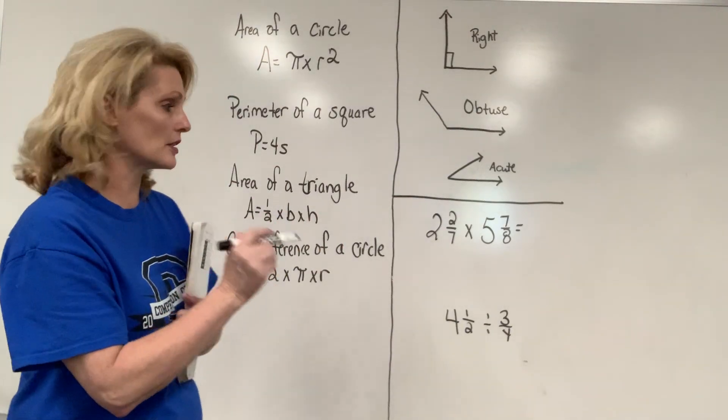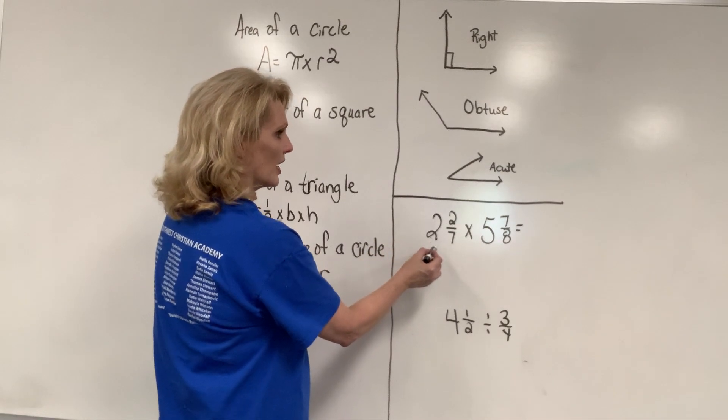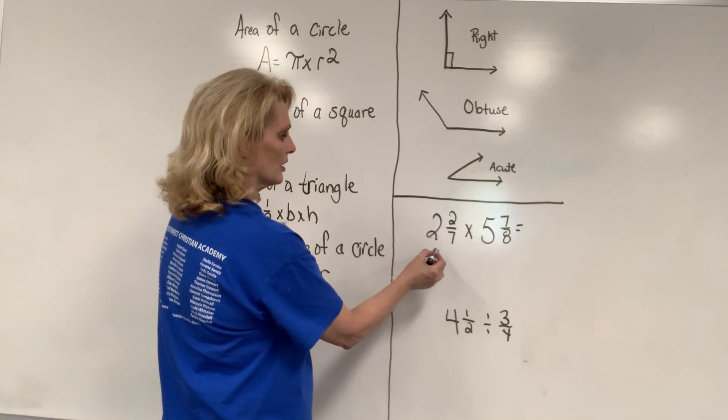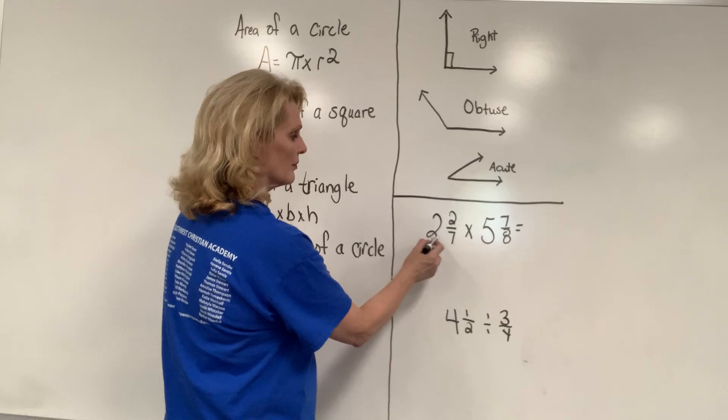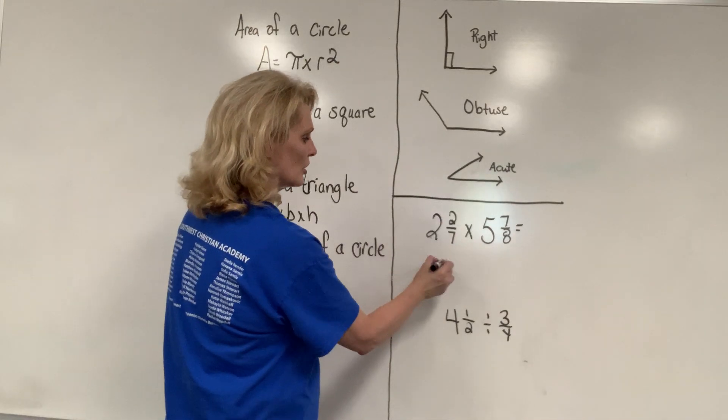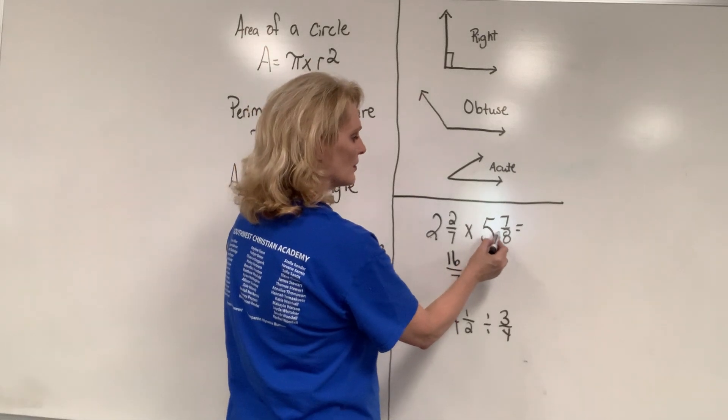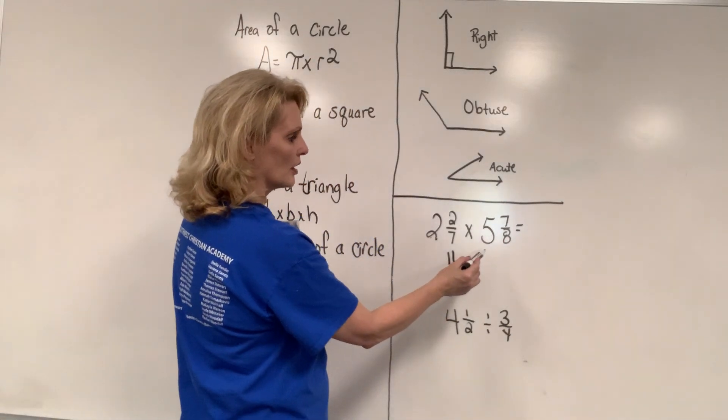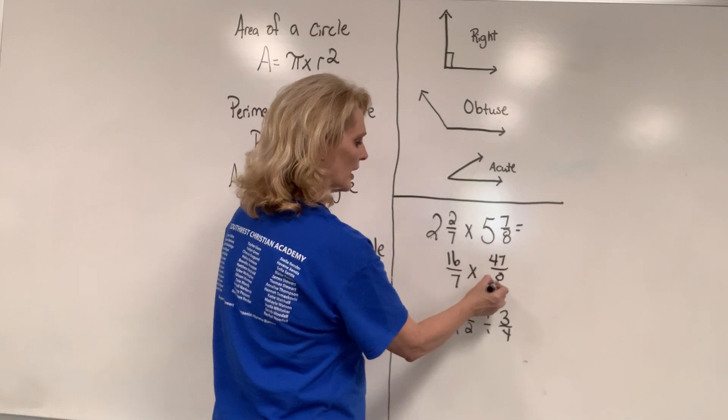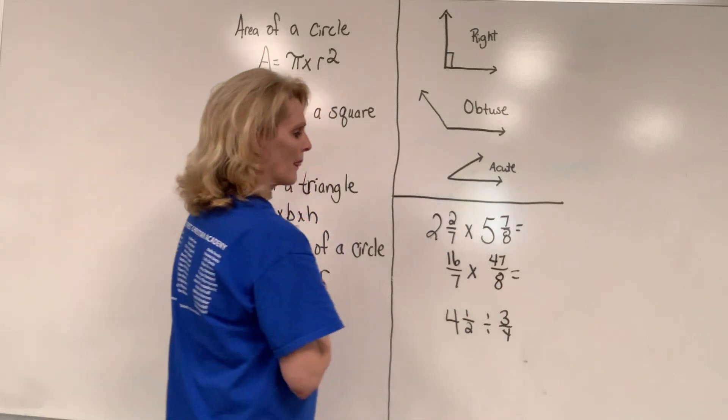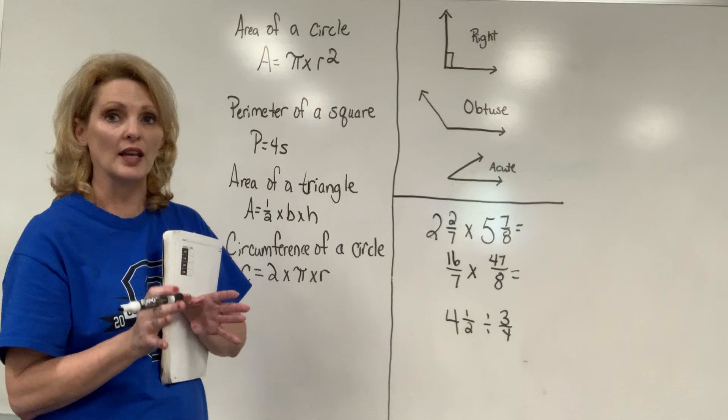If you have a mixed number, we'll say 2 times 7 is 14 and then 14 plus 2. So multiply the bottom, 2 times 7 plus 2, which is 16 over 7. Then you have 5 times 8 is 40 plus 7. So that's 47 divided by 8. Now, before we start any multiplication whatsoever, we need to see can we cancel out within.